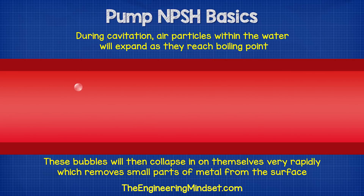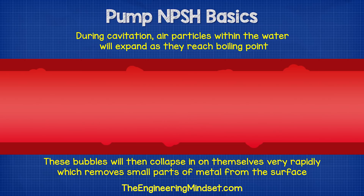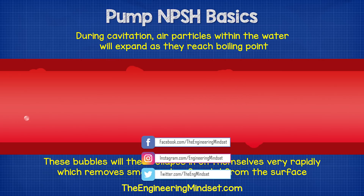During cavitation, air particles within the water expand as they reach boiling point. These will then collapse in on themselves very rapidly. As they collapse, they will damage the impeller as well as the pump casing. This removes small parts of metal from the surface, and if this keeps occurring, it will eventually destroy the pump. Therefore, we must ensure the available pressure is higher than the required pressure of the pump.